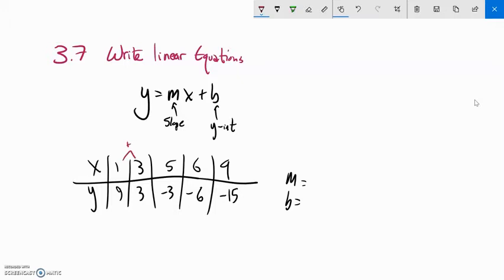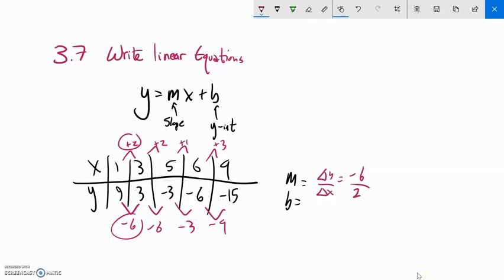So it looks like this changed by 2, this changed by 2, this changed by 1, this changed by 3. This went down 6, this went down 6, this only went down 3, and that went down 9. So my m, my slope, is change in y over change in x. So notice if I go negative 6 over 2, meant to write a 6, negative 6 over positive 2, negative 6 divided by 2 is negative 3. And if I do that here, negative 3 over 1, that gives me a negative 3. Or if I do it here, negative 9 over 3 is also negative 3. So I know my slope's negative 3.